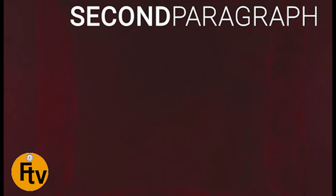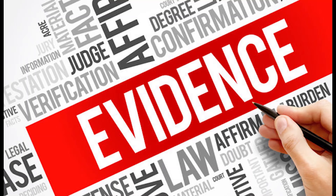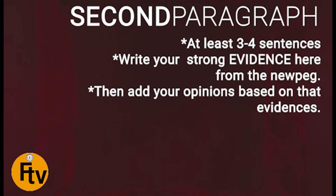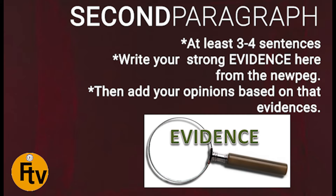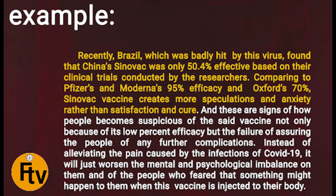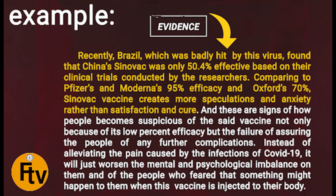For the second paragraph, at least three to four sentences. Then you are going to write your strong evidence here from the newspeg — dito mo susuportahan ang inilagay mong opinion doon sa first paragraph. Then add your opinions based on that evidence. Magfocus ka doon mismo sa newspeg or sa evidence na nilagay mo dito sa second paragraph. The highlighted sentence in the example is actually your evidence — a supporting detail or fact coming from your newspeg from the first paragraph. Then sa iba pa nito ay ilalagay mo ang iyong mga opinion — you can write at least two or three sentences para mapalakas ang iyong evidensya or ang inyong opinion tungkol dito sa inilagay mong facts sa first sentence.